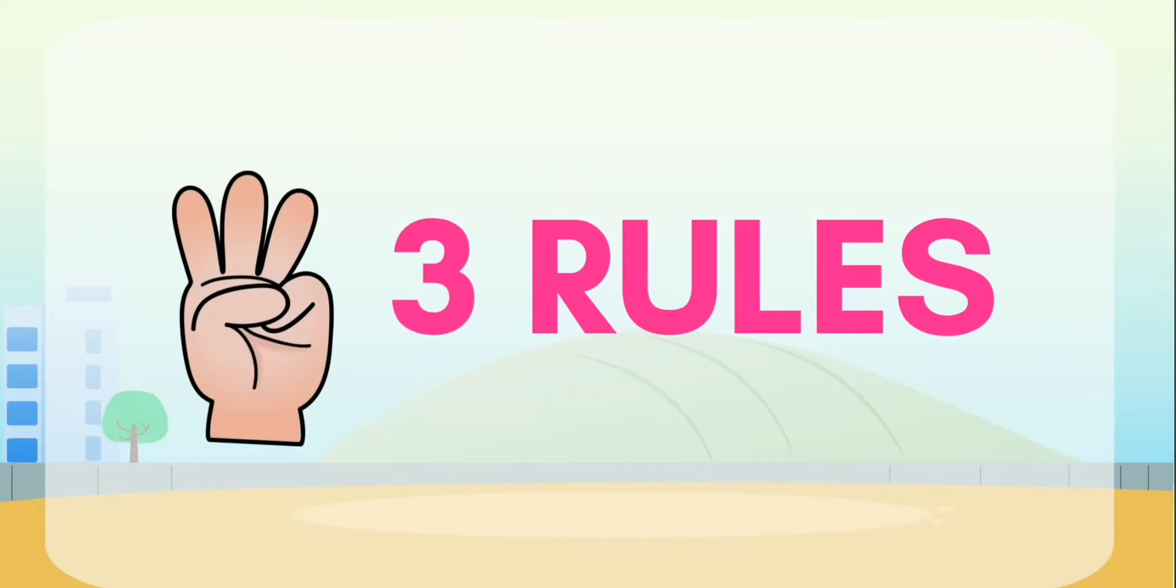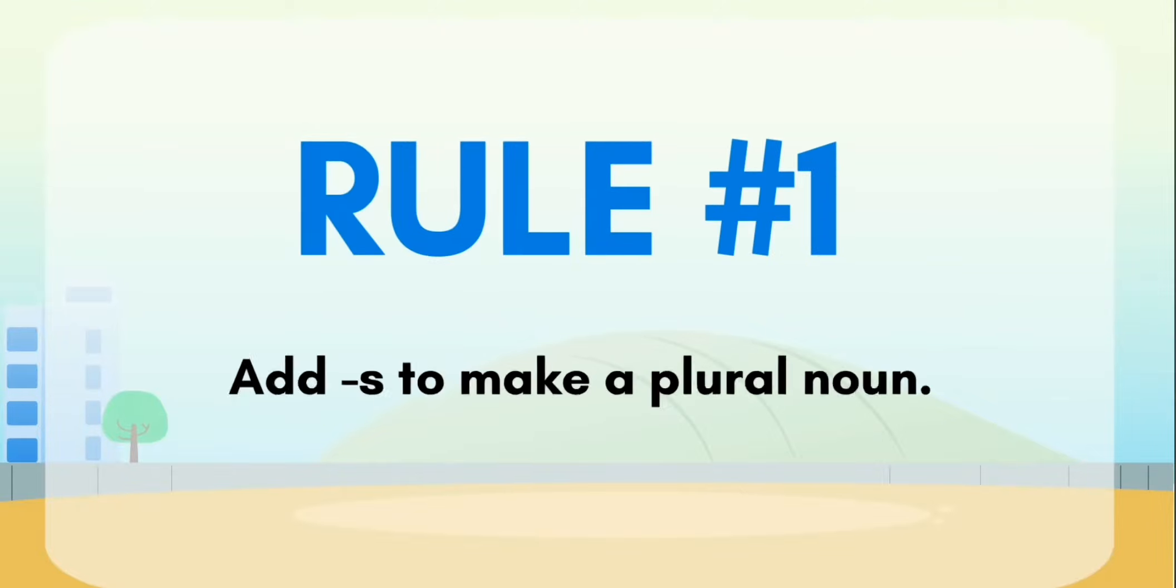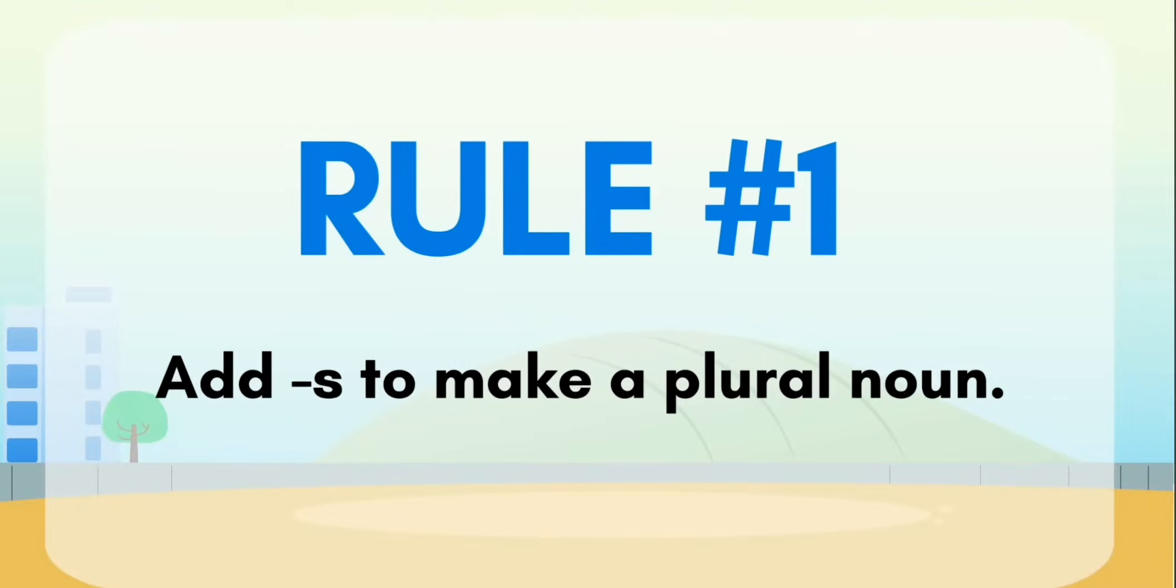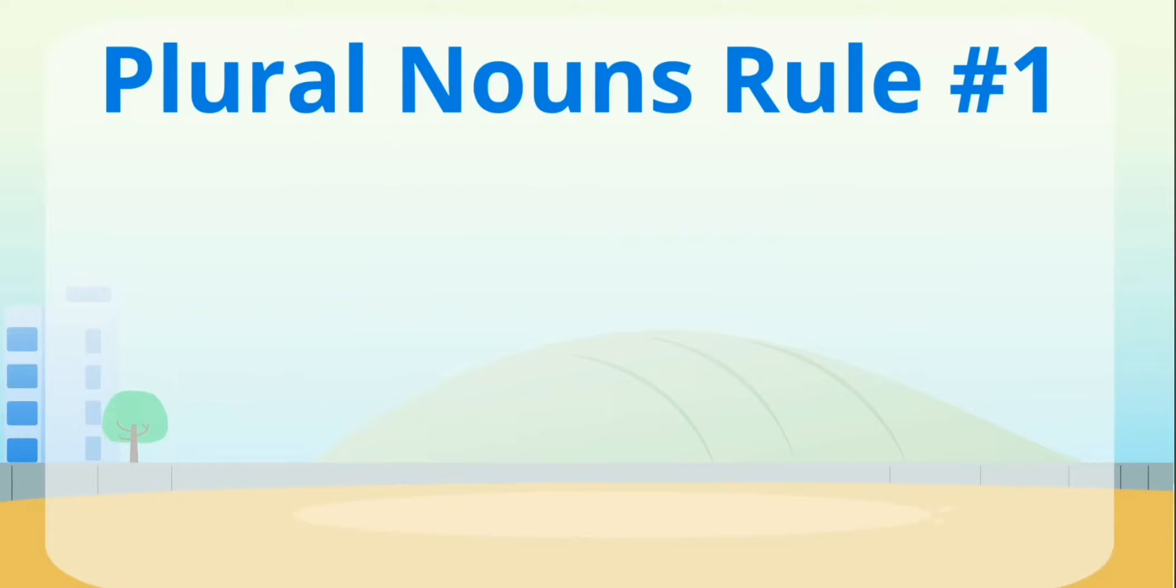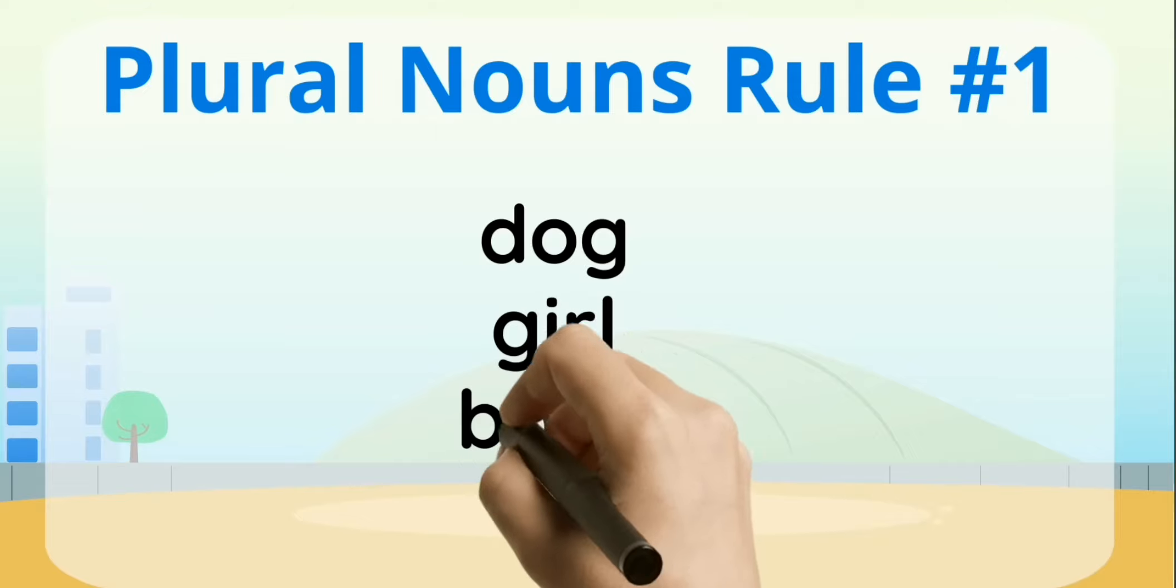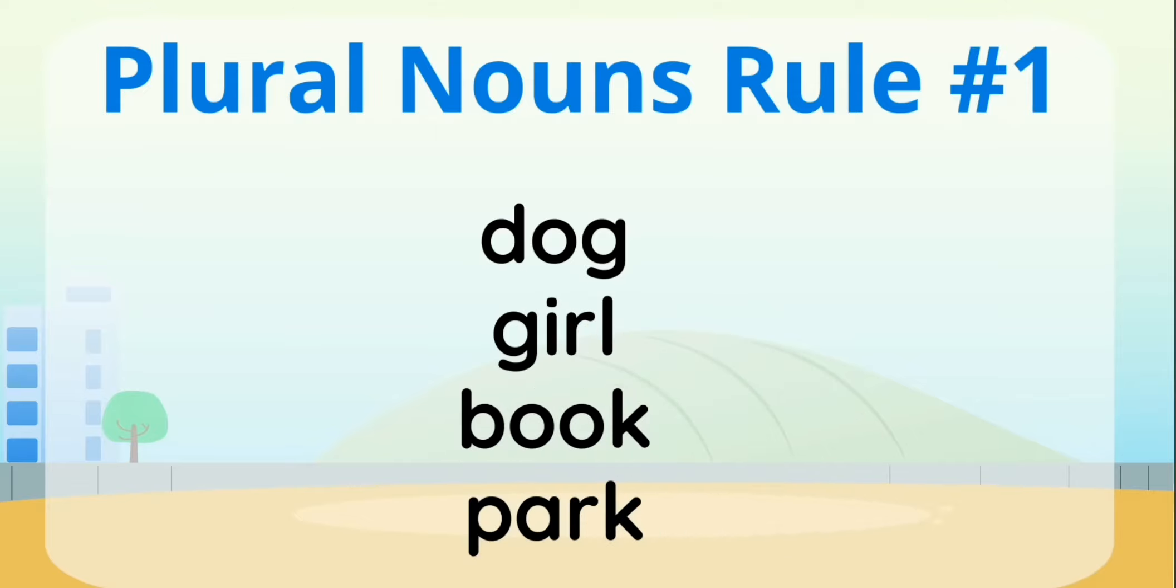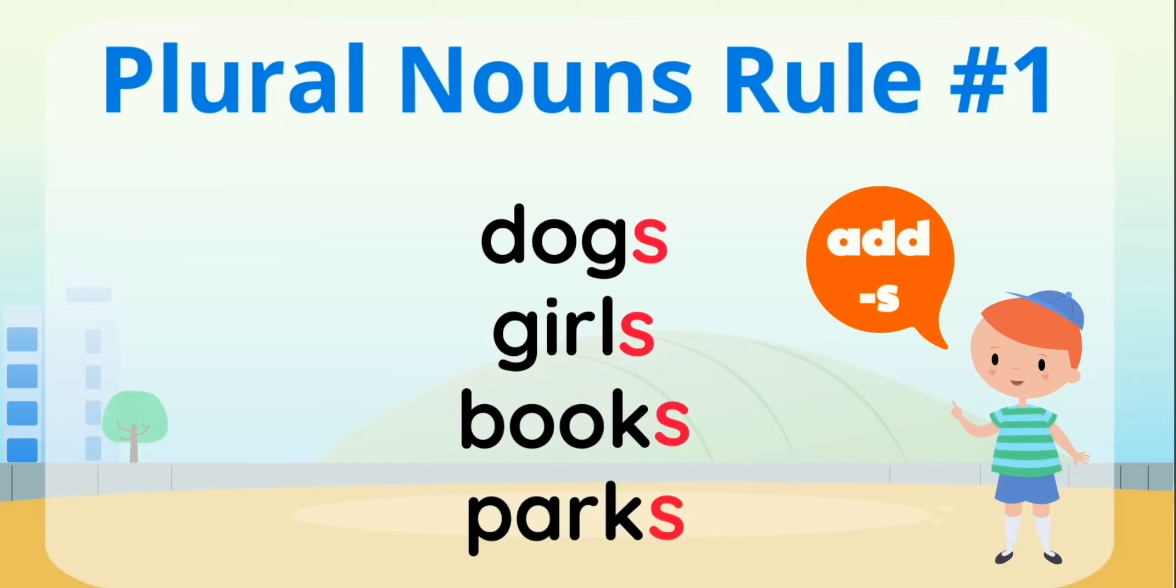We're going to look at three rules today to change the singular noun to a plural noun. Rule number one: Add s at the end to make a plural noun. Let's look at a couple of singular nouns. Dog, girl, book, park. So how do you make these singular nouns plural to show that there's more than one? All you have to do is add s. Dogs, girls, books, parks. Easy peasy, right? But hold on a minute. They're the easy ones. Let's look at the next rule.